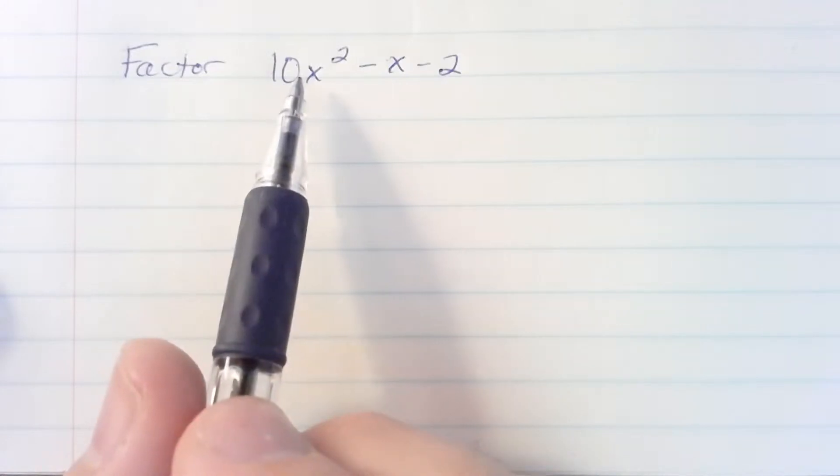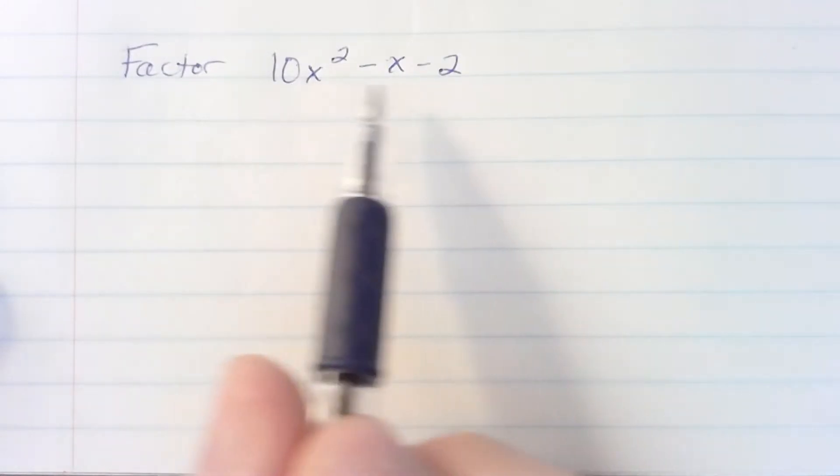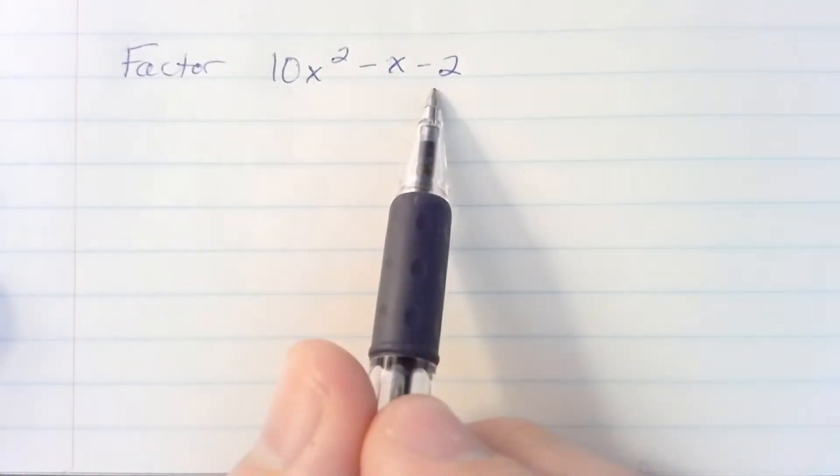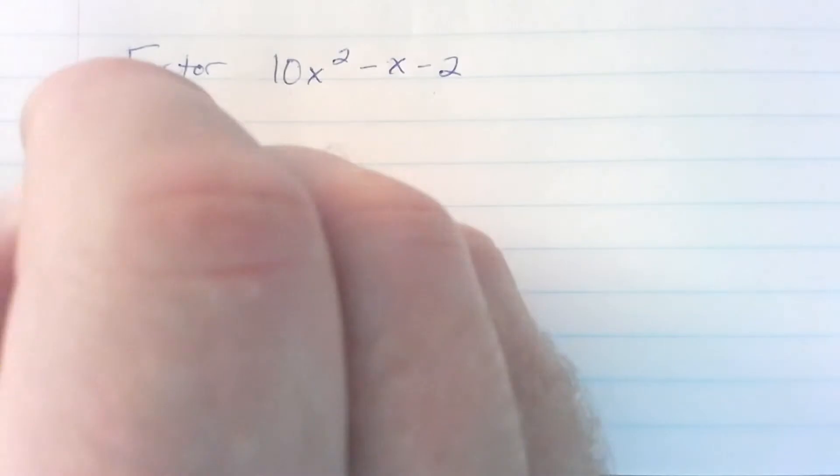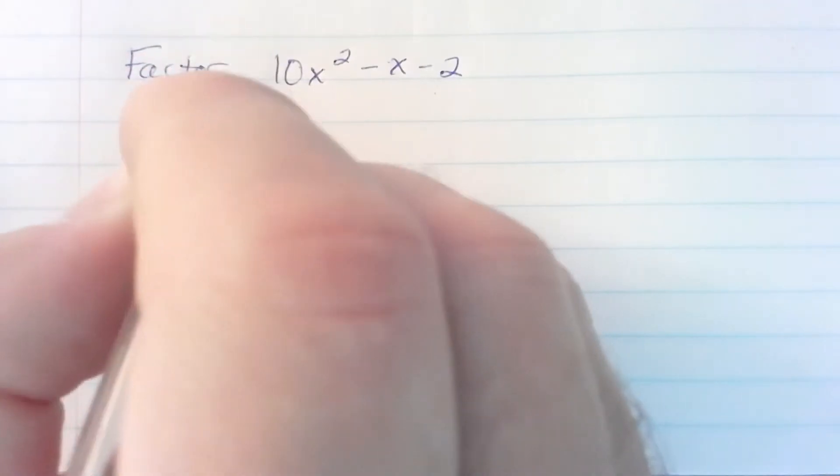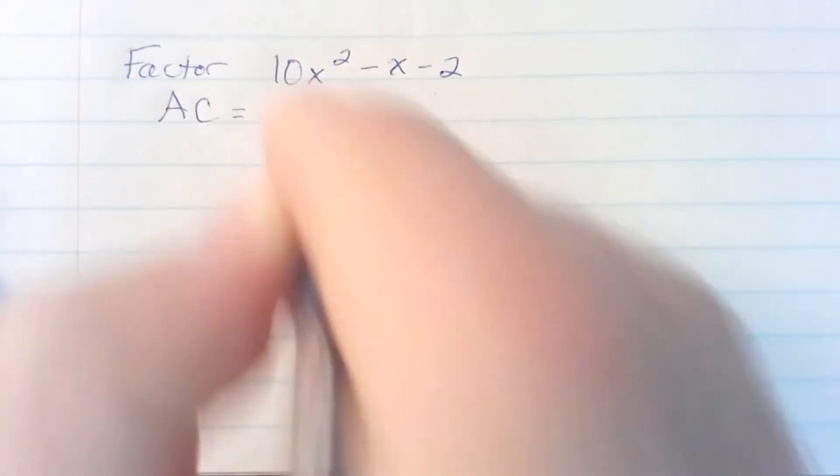AC factor accounts for the A number of a quadratic trinomial and the C number. In this case 10 and negative 2. What we do first is multiply A times C. In this case 10 times negative 2 is negative 20.